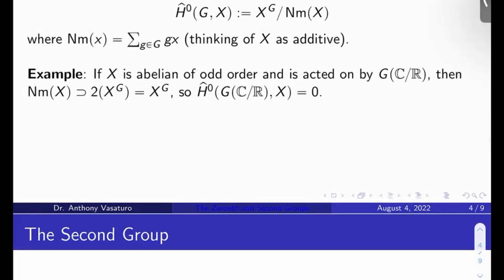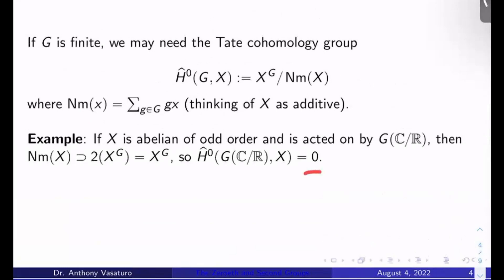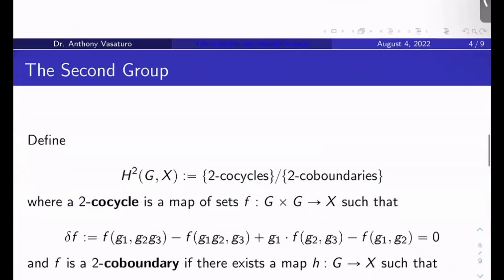Example: if X is abelian of odd order and it's acted on by the Galois group of C over R, then the norm of X obviously contains X^G, right? An easier way to see that is it contains 2X^G, but 2X^G is just X^G. And so what's the zeroth Tate cohomology? Well, it's just zero because if X^G is contained in norm X, then when I mod out by norm X, I have nothing left. So I get trivial zeroth Tate cohomology group in this example.